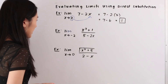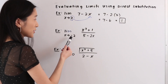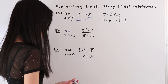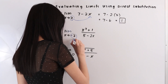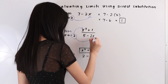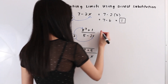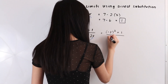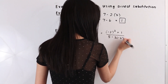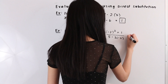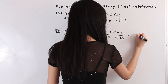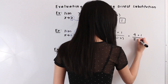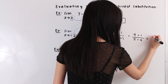Now let's take a look at this next example. We have the limit as x approaches negative 2 of the function x squared plus 1 over 5 minus 2x. Let's take this negative 2 and plug it in for x. Doing that we have negative 2 squared plus 1 over 5 minus 2 times negative 2. Simplifying, negative 2 squared equals 4, plus 1 over 5, and minus 2 times negative 2 equals positive 4. So we have 5 over 9.